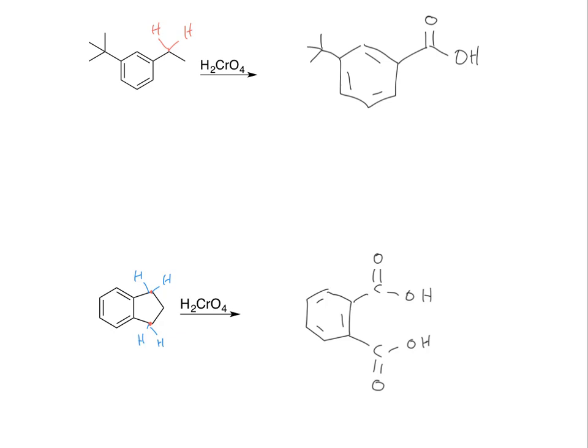And then we need that to kind of get that foothold to get the oxidation started. And it's got to be a strong oxidizing agent. So typically what you see is either one of these chromic acids or potassium permanganate, which is KMnO4. So those are the two to look for, and they're really strong oxidizing agents.